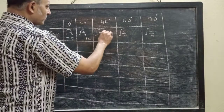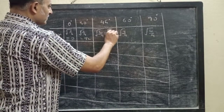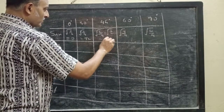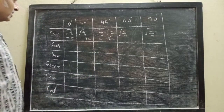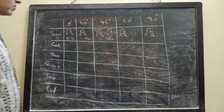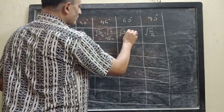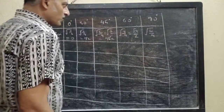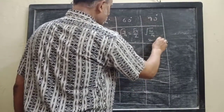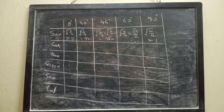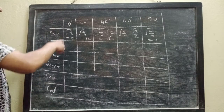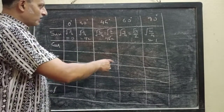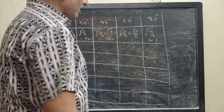Now root of 2 by 4 can be thought of as root of 1 by 2, because 2 cancels with 4, then it becomes 1 by root 2. So I get sin 45 degree is 1 by root 2. Next, root of 3 by 4, we can write it as root 3 by 2. And as 4 by 4 is 1, so I get sin 90 degree is 1. So finally: sin 0° = 0, sin 30° = 1/2, sin 45° = 1/√2, sin 60° = √3/2, sin 90° = 1.